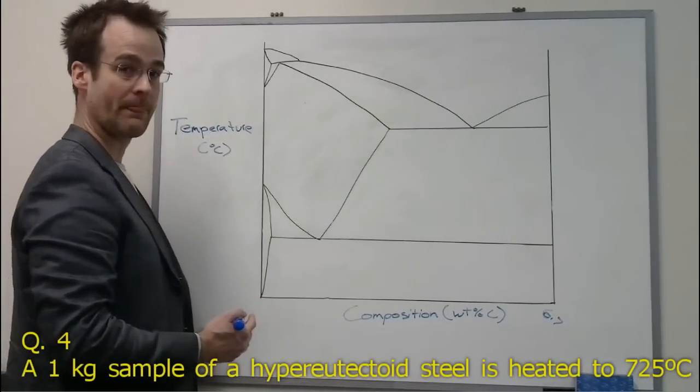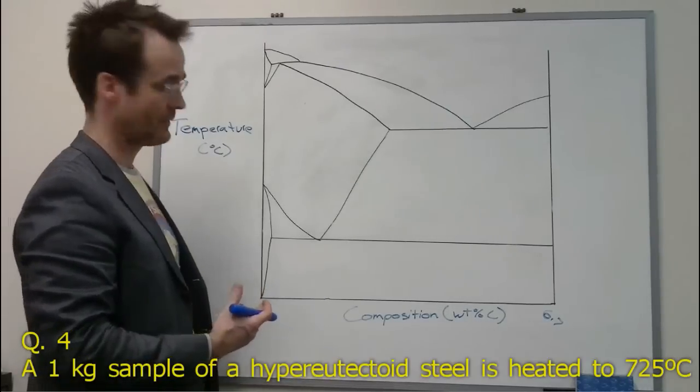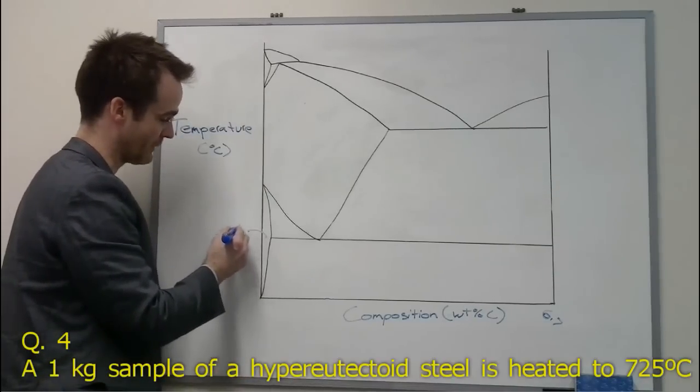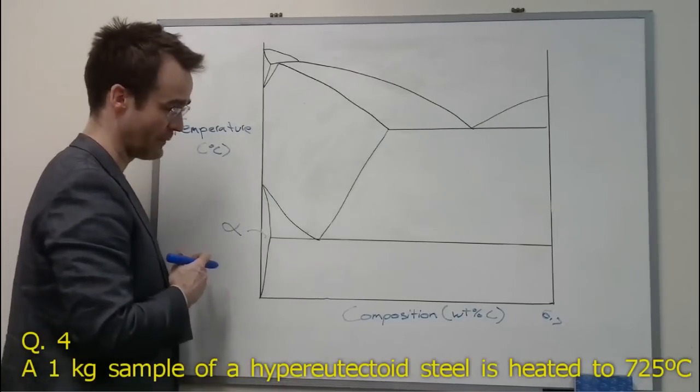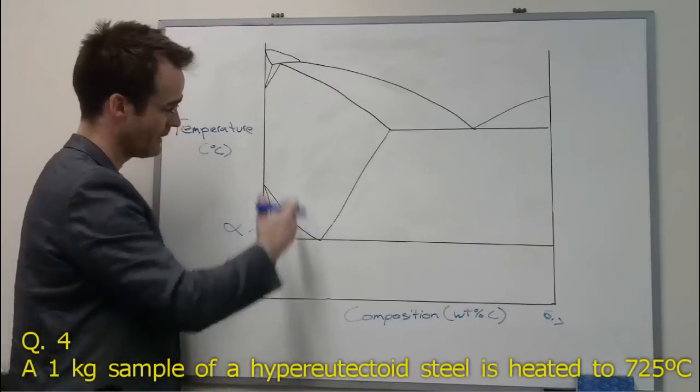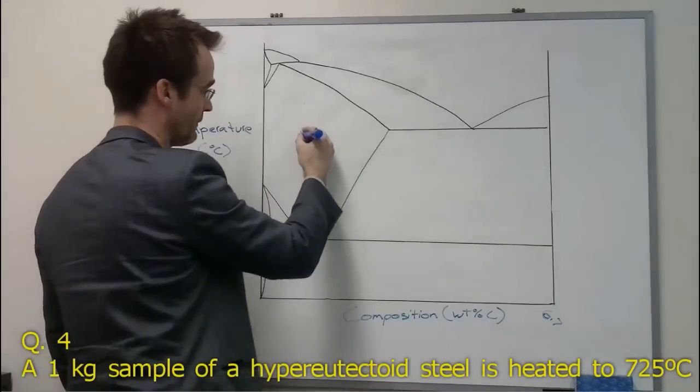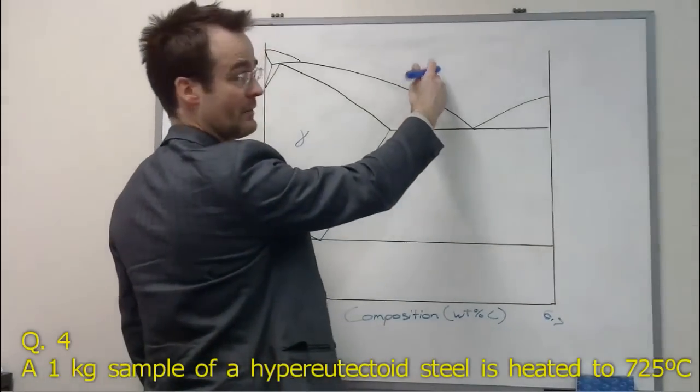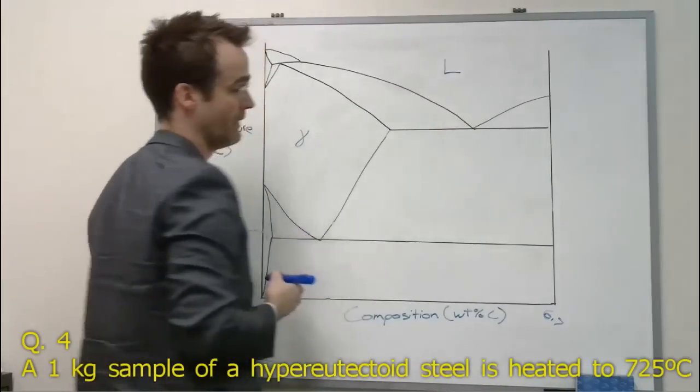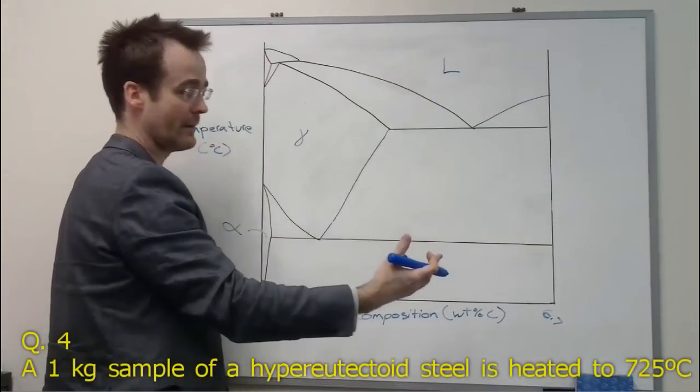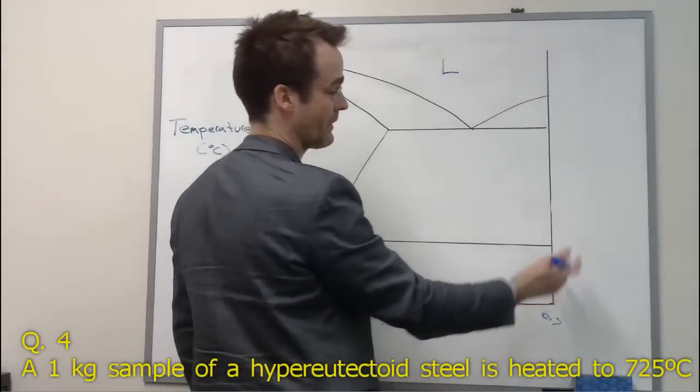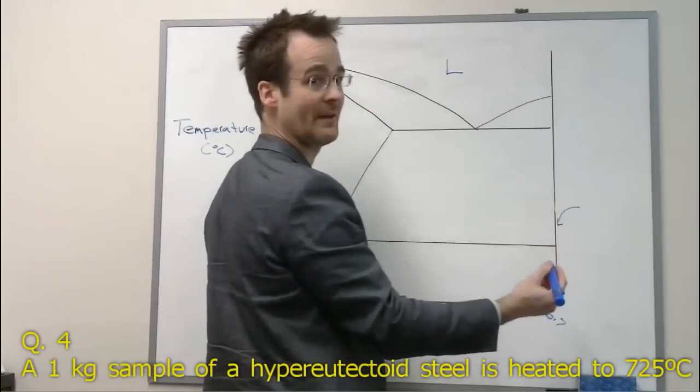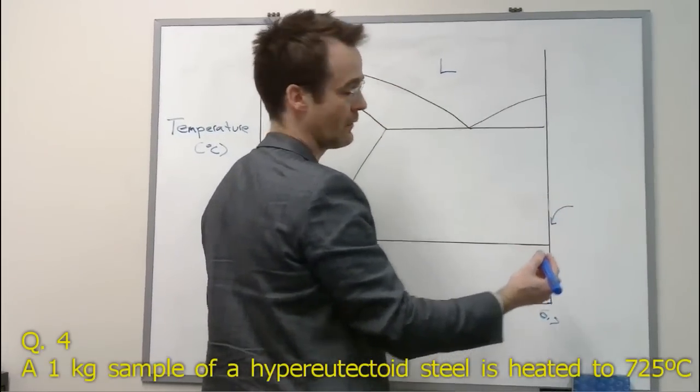So next thing we could do is actually label the single phase fields. So on the far left, we have the single phase alpha region. A little bit higher temperatures, we have single phase gamma. Even higher temperatures, we have the liquid. And on the extreme right, at 6.7 weight percent carbon, we have the intermetallic Fe3C or cementite.